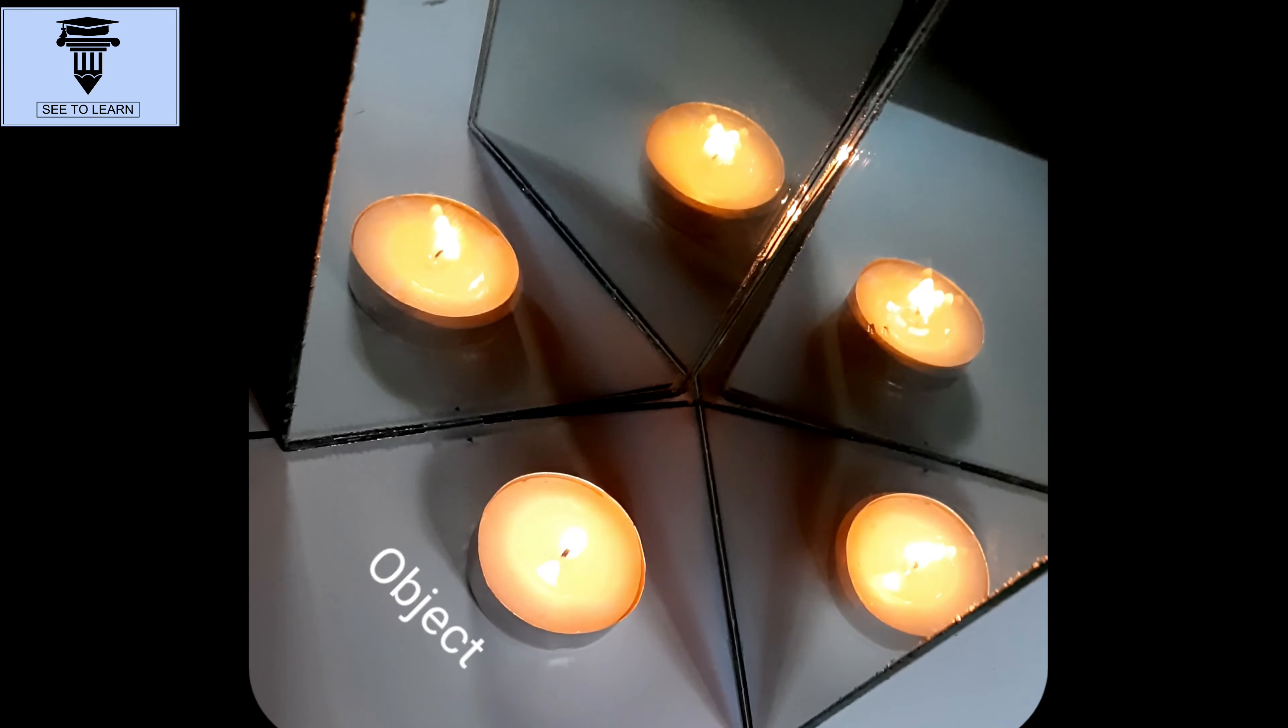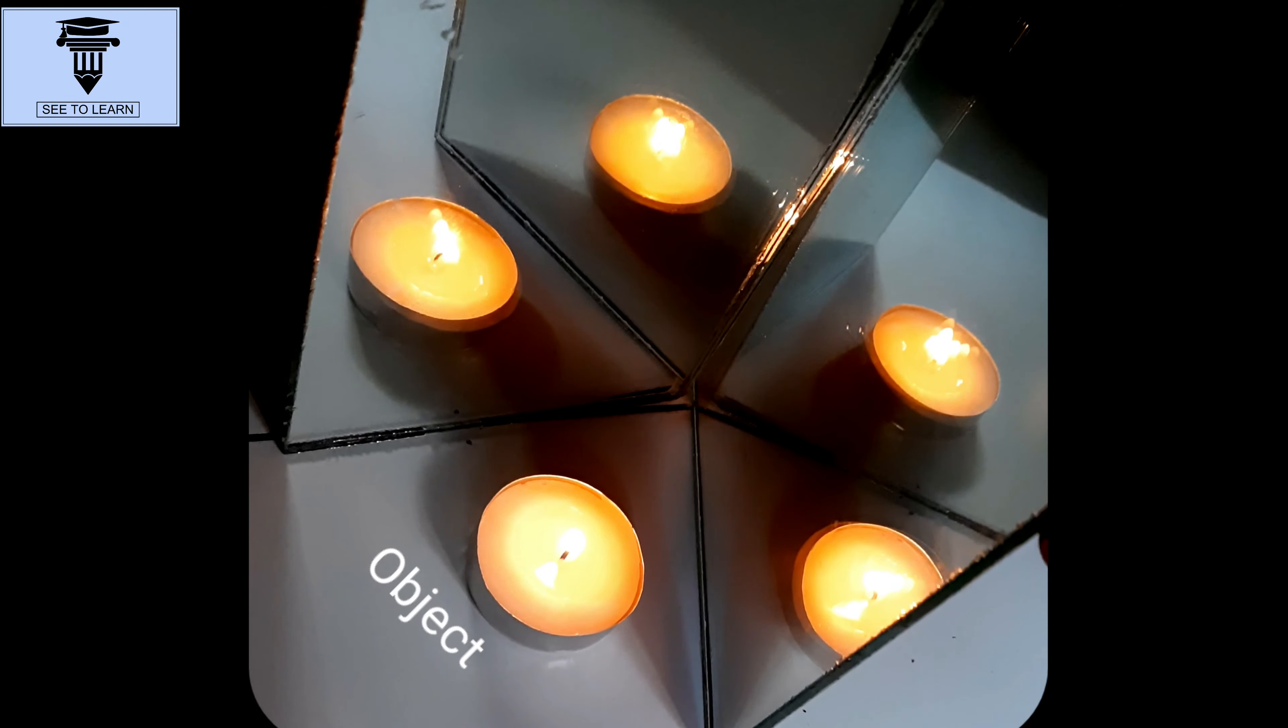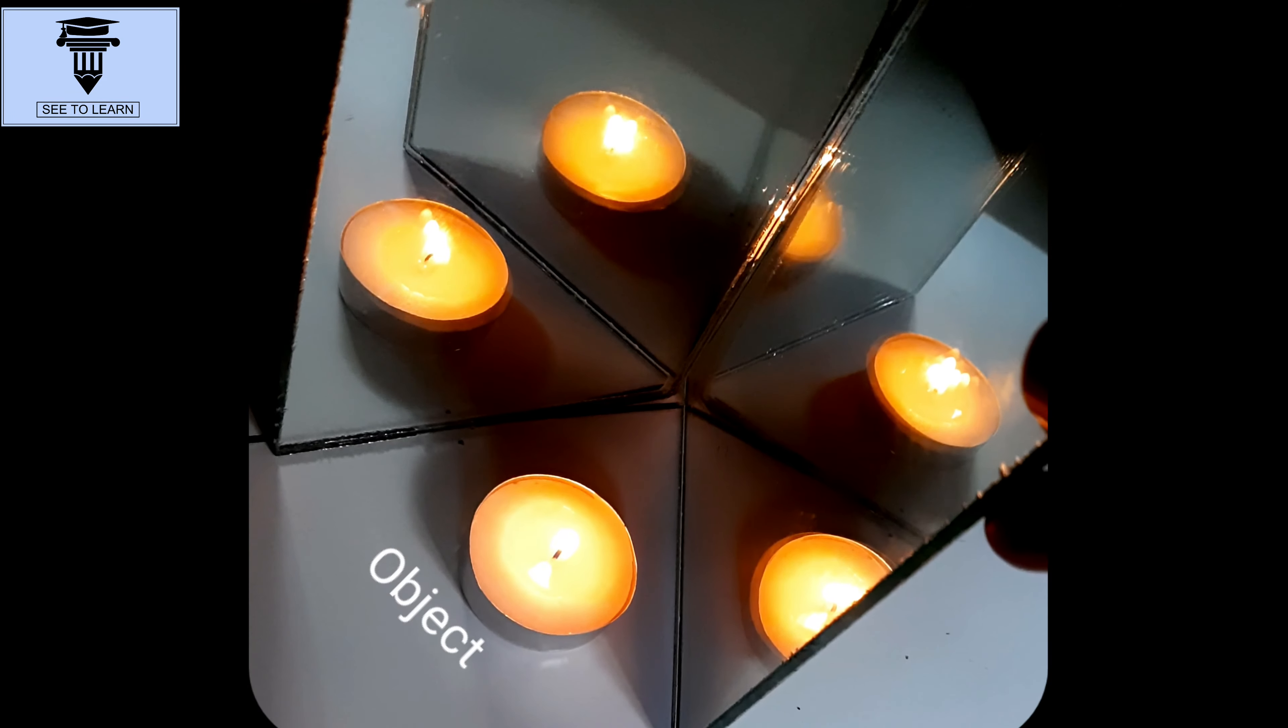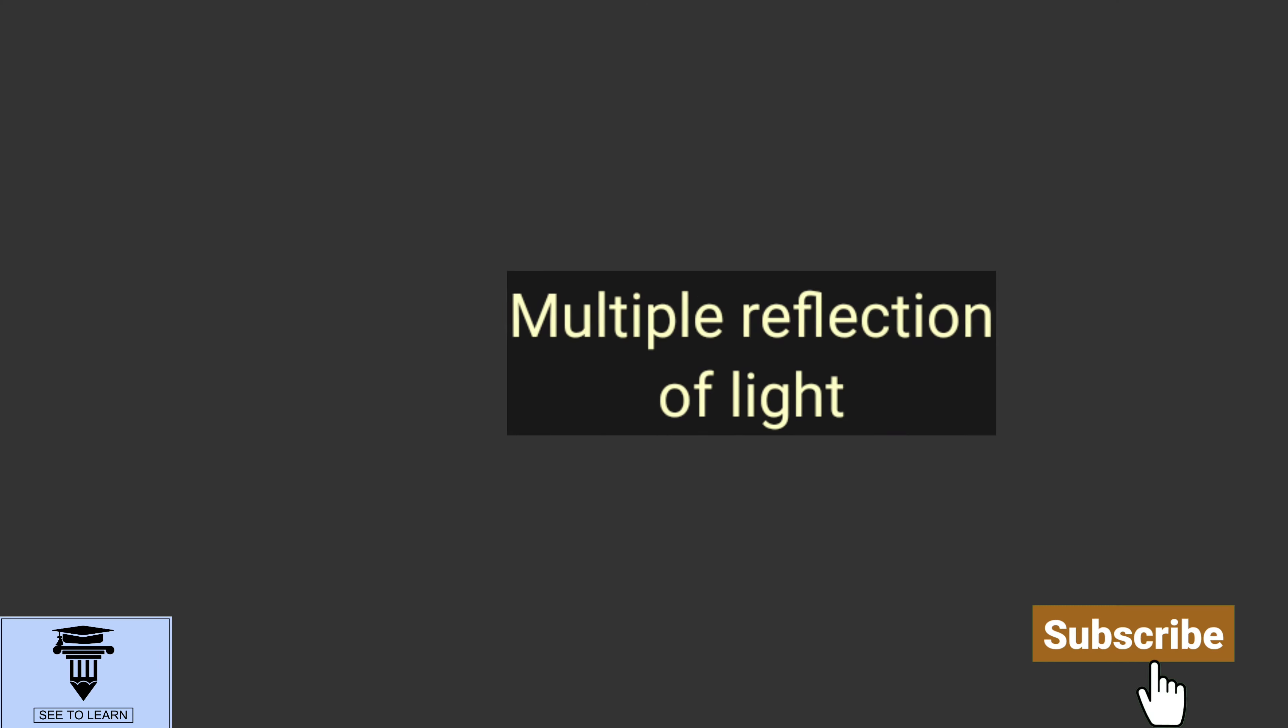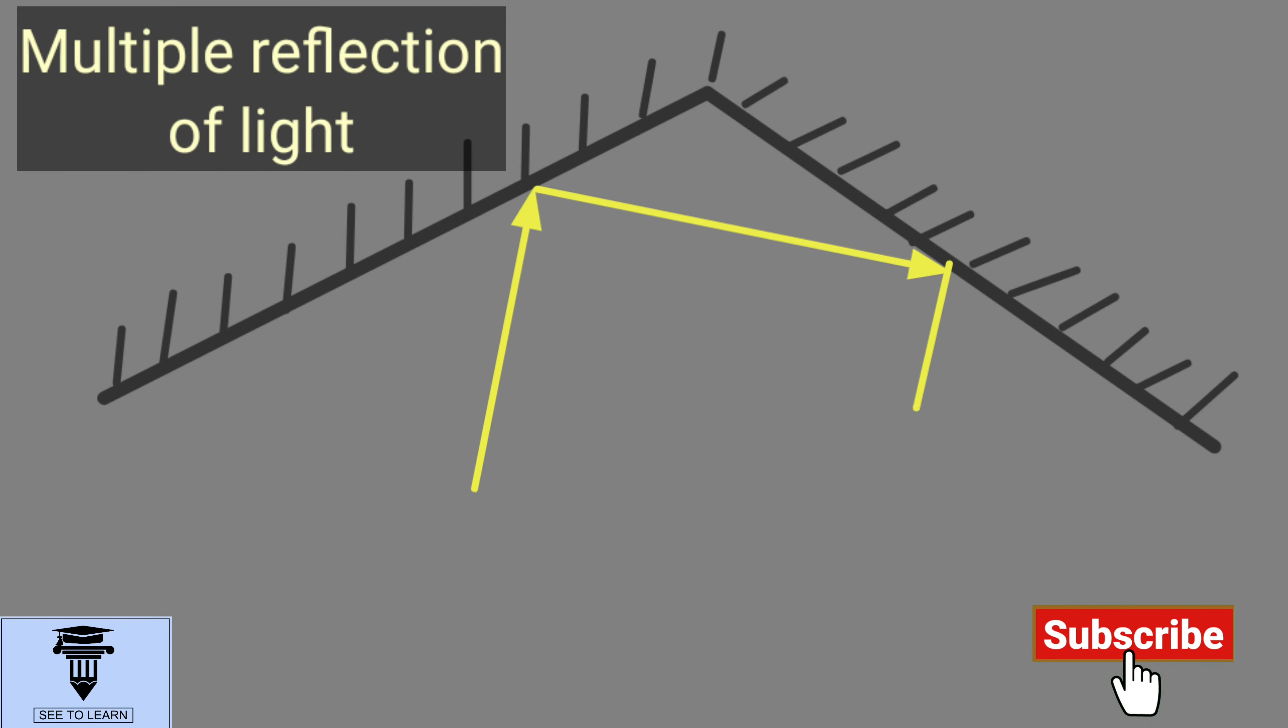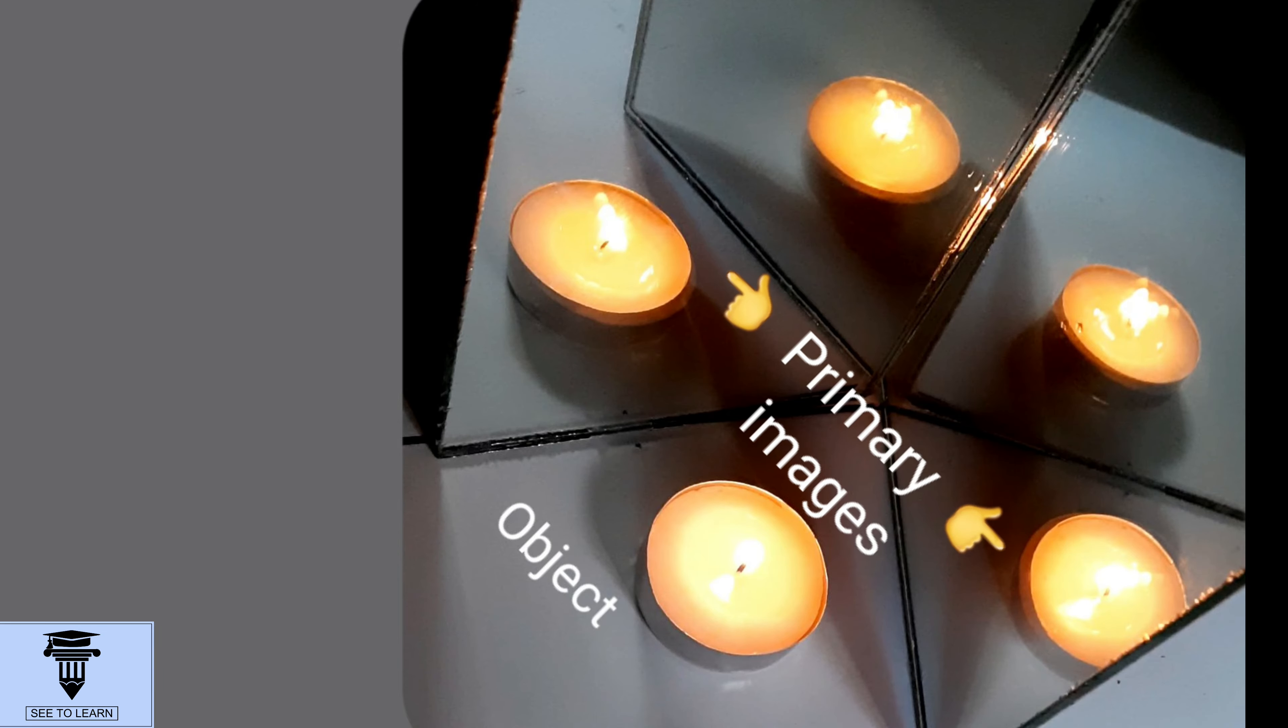Why is the number of images changing? It's because of multiple reflection of light by the two mirrors. The light reflected by one mirror is incident on another mirror and is reflected again by the second mirror. Thus these two primary images act as objects again and form these secondary images.